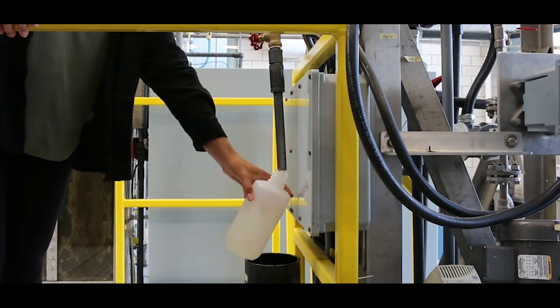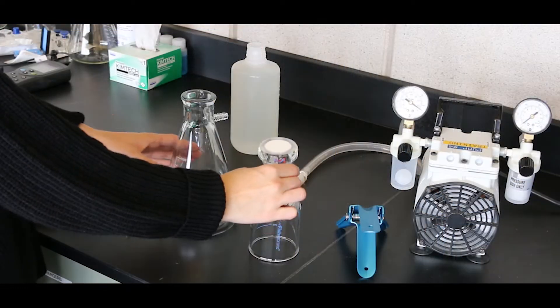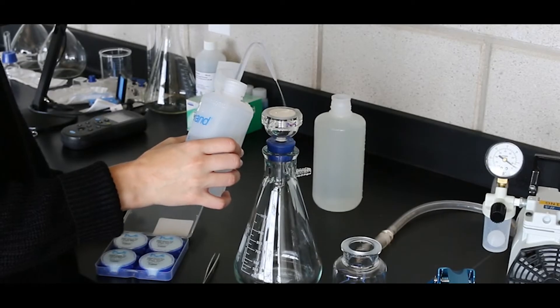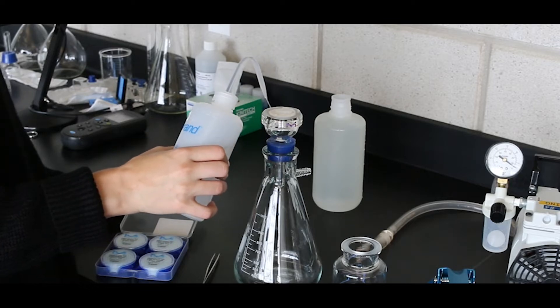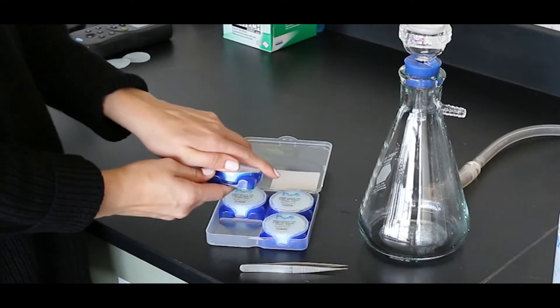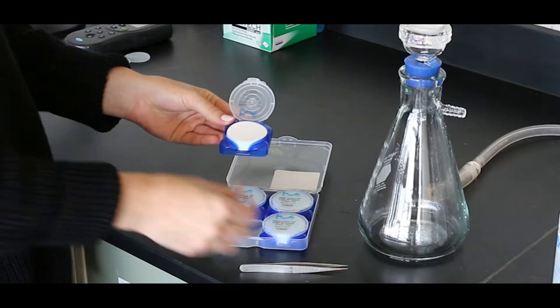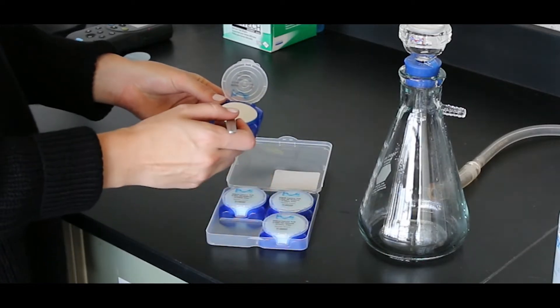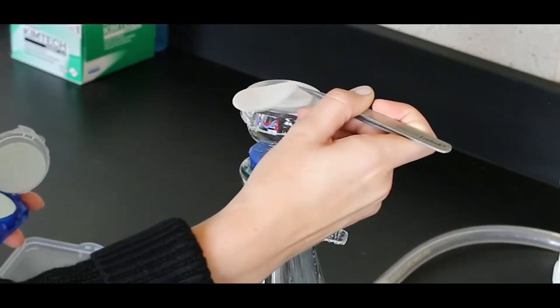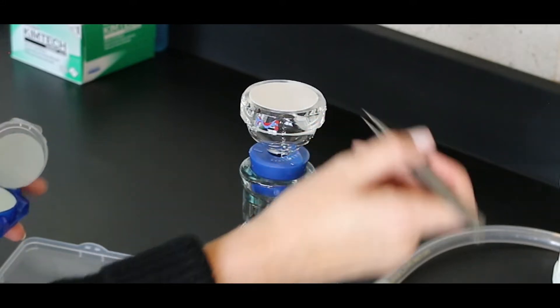Assemble the filter apparatus. Place the mount on the filter flask. Dampen the filter mount with deionized water and place the 0.45 micron filter using forceps to gently grip the edge. Place the filter with the same side up as was found in the filter container.